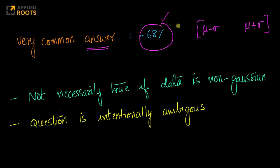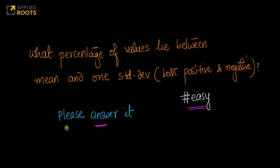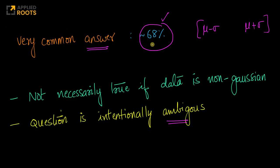But the reason this question is asked at a product-based company is because it is intentionally left ambiguous. They have not told you what the distribution of the data is. Many people who answered 68% assumed that the data is Gaussian distributed or normally distributed. The interviewer can now say nobody told you that — this 68% answer is not necessarily true if the data is non-Gaussian.